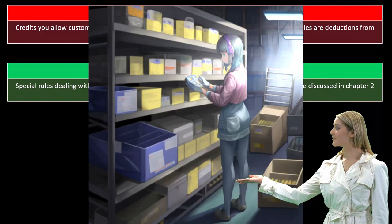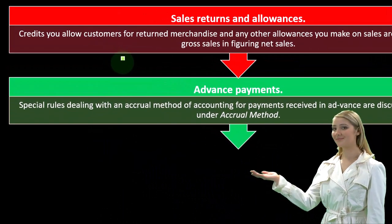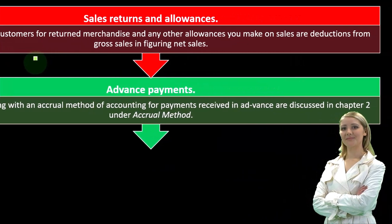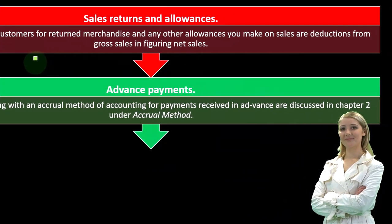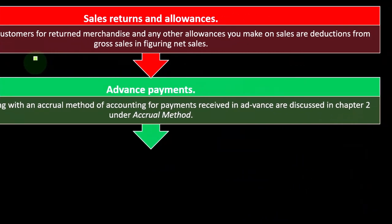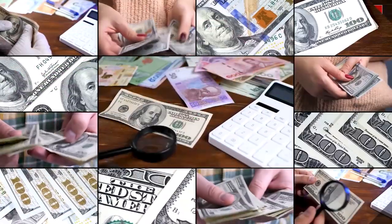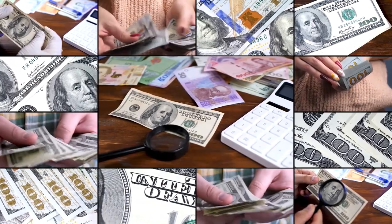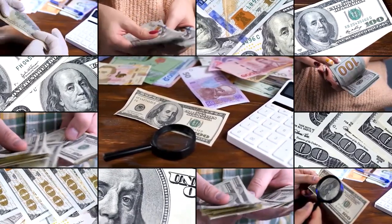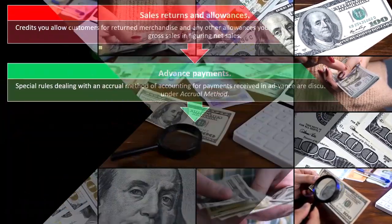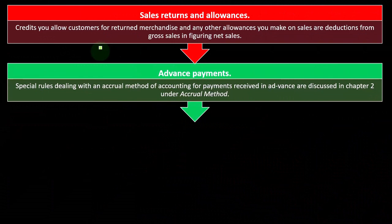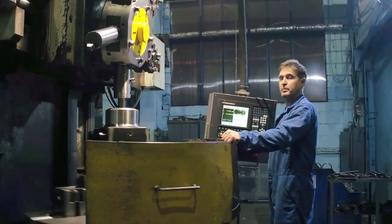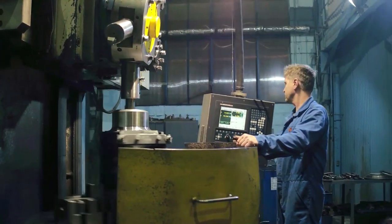Advanced payments: special rules dealing with an accrual method of accounting for payments received in advance are discussed in chapter two under accrual method. On an accrual method, you're going to record revenue when you do the work. Typically you do the work at the same point in time you get paid, or you do the work before you get paid.